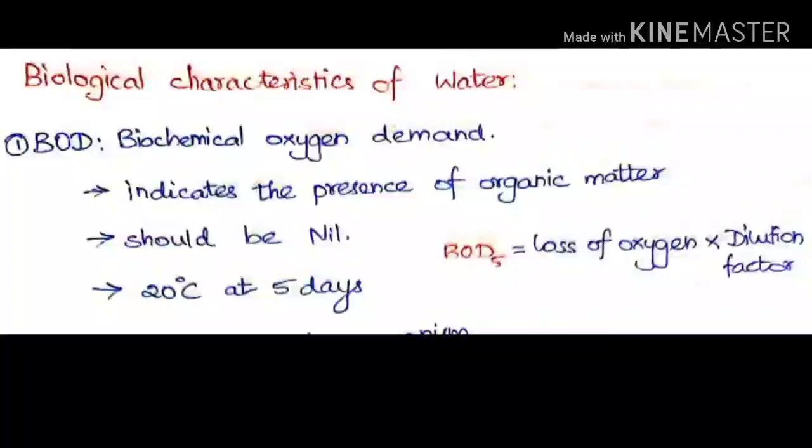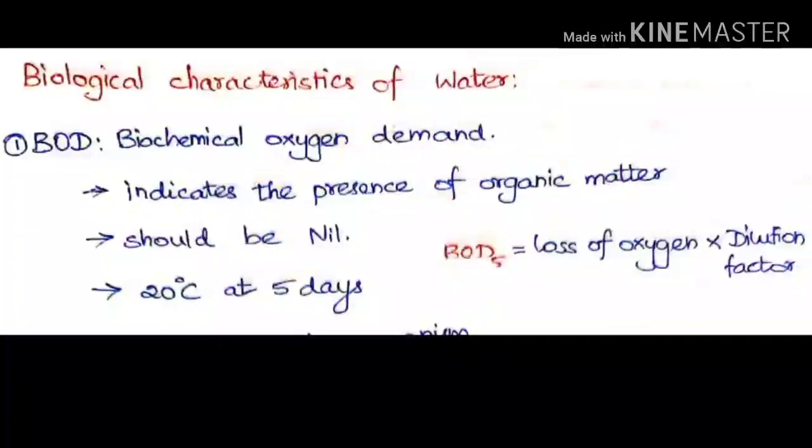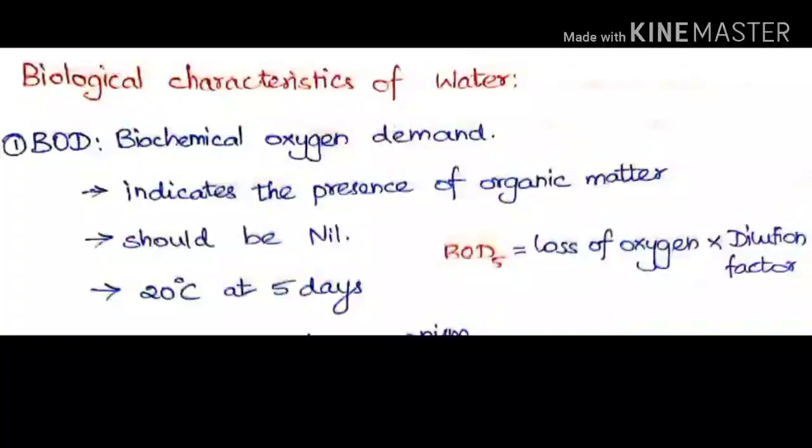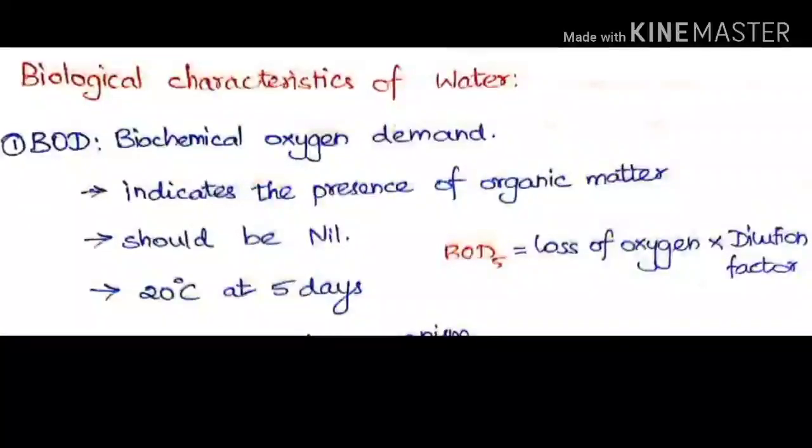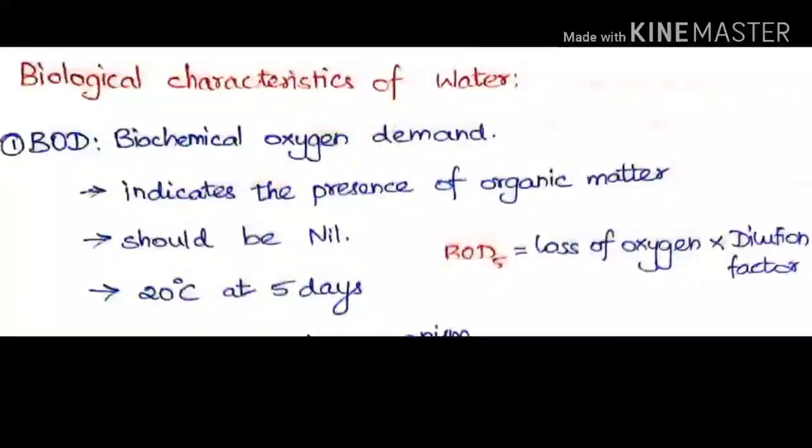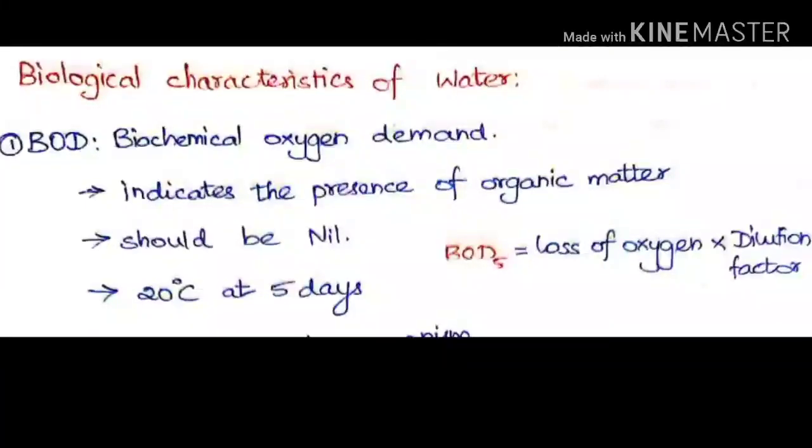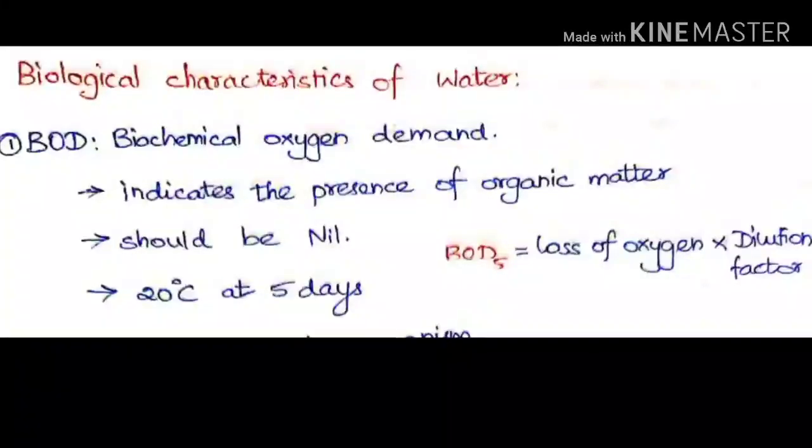The dissolved oxygen is found out at the first day and the fifth day. The BOD of fifth day can be defined by loss of oxygen - that is final DO minus initial DO times the dilution factor.